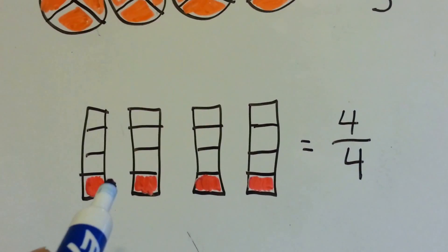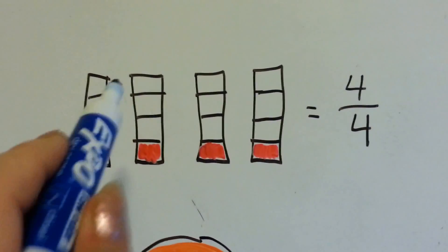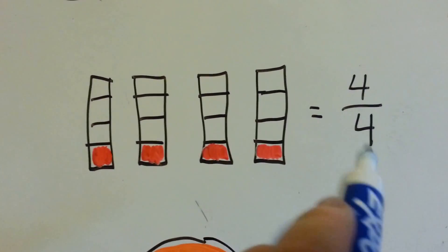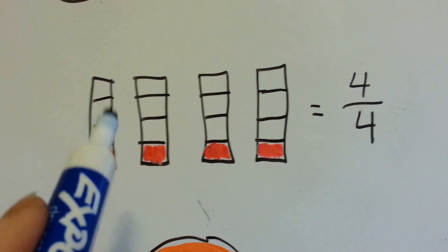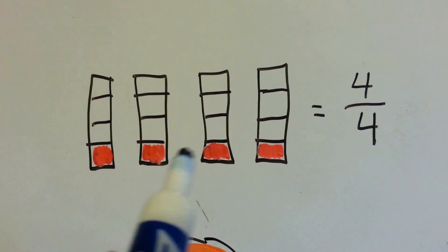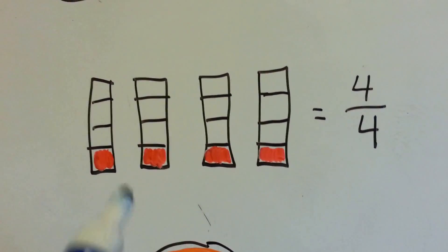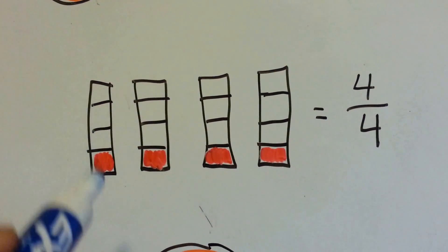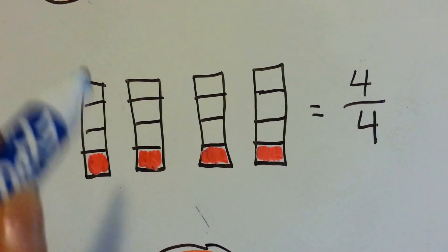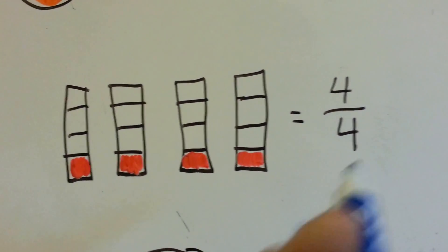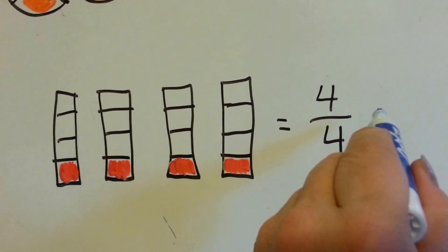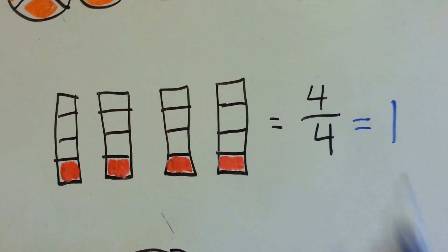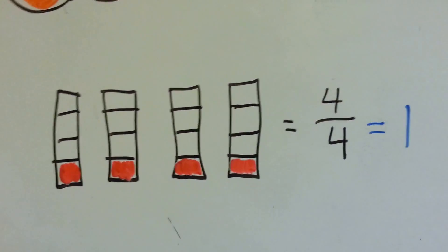Look at it this way. Instead of the whole thing being filled in for four fourths — this is a fourth, this is a fourth, this is a fourth, and this is a fourth. If they were all in the same rectangle, they would fill it all up and they would have one whole. Four divided by four is one.